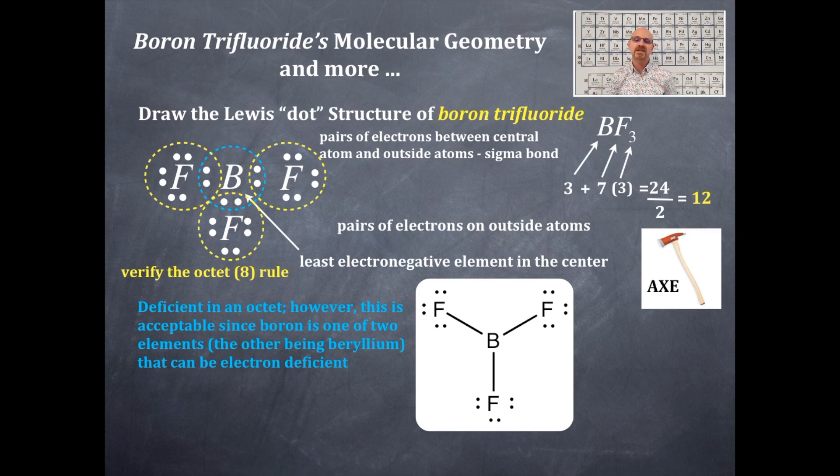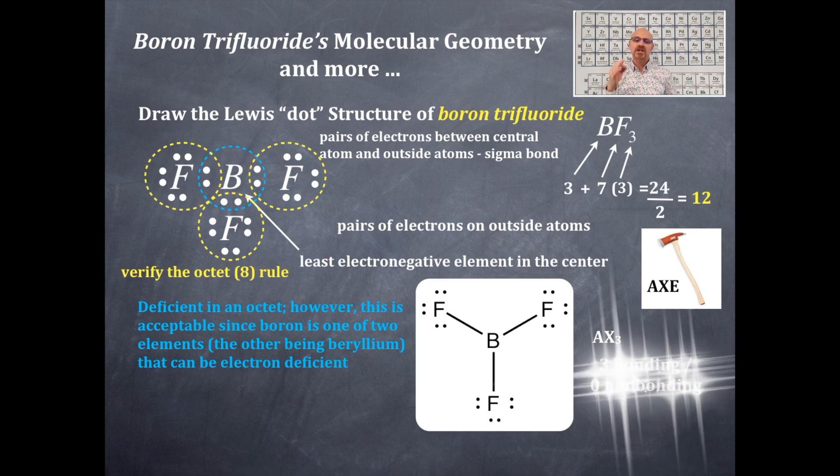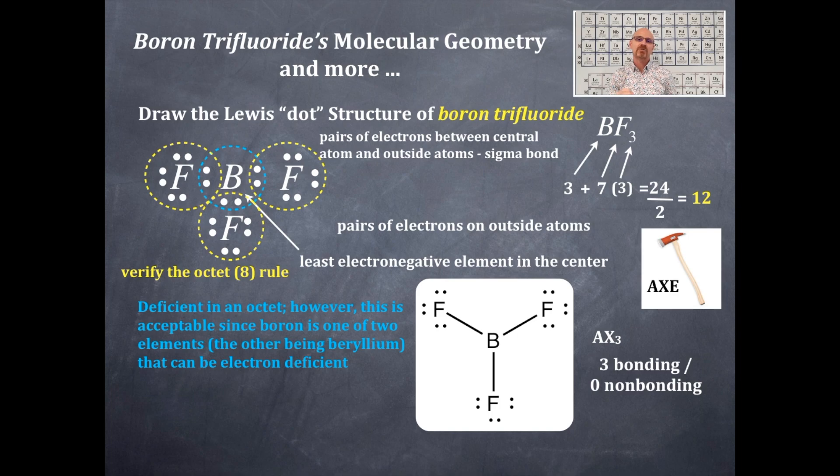Now how many bonding and non-bonding do you see? I see three bonding and zero non-bonding. So either from the AX3 or the three bonding and zero non-bonding, you should be able to get this shape. And that shape is of course trigonal planar.